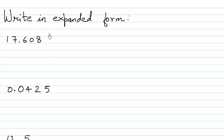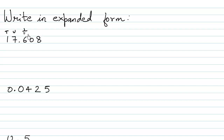Now let us see how to write these numbers in the expanded form. Let us start with the first one: 17.608. We know that this is the units place, this is the tens place, this is the tenths place (1 upon 10), this is the hundredths place (1 upon 100), and this is the thousandths place (1 upon 1000).